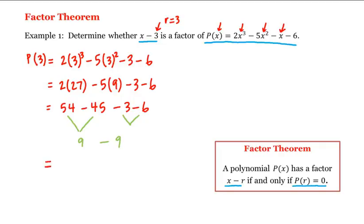So sure enough, yes, this is equal to 0. So since p of 3 is equal to 0, x minus 3 is a factor of p.